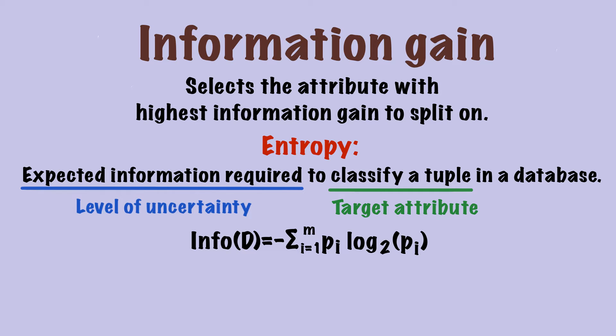To recap, we've talked about information gain is a criterion to select attribute to split on, and entropy is the expected information required to classify a tuple. The formula of entropy is the negative sum of pi times log base 2 of pi. Here, the entropy is calculated on the whole database.